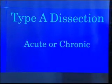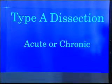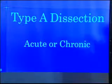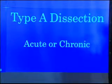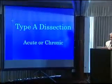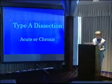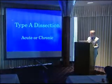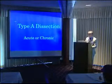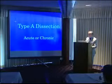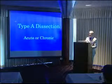We talked about type A dissection yesterday. It comes in acute or chronic form. Generally, the agreement is about two weeks. So if it is less than two weeks, it's called acute. And if it is more than two weeks, it's called chronic. It is a surgical condition — the patient needs to come to the operating room to prevent further catastrophe.